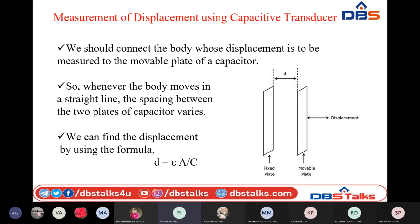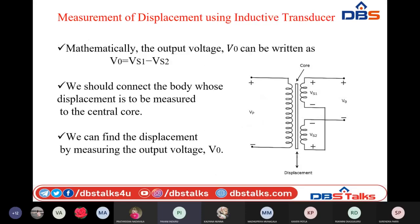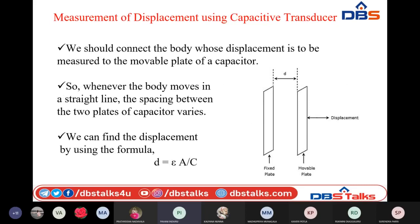So resistive, inductive, and capacitive transducers are all helpful in determining the resultant displacement — a physical quantity — in terms of electrical parameters. All three are passive transducers that require one source for their operation.